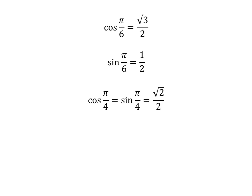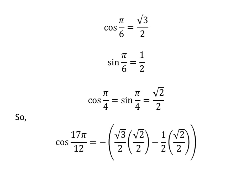As we know, cosine of π/6 is equal to √3/2, sine of π/6 is equal to 1/2, and cosine of π/4 equals sine of π/4 equals √2/2. We plug in these values in the above equation. We get cosine of 17π/12 is equal to minus [(√3/2)·(√2/2) minus (1/2)·(√2/2)].